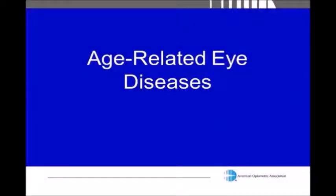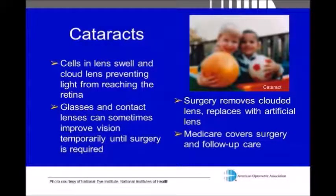Now we'll turn our attention to some age-related eye diseases. One of the most common is cataracts. What happens is the cells in the lens swell up and cause cloudiness in the lens, which prevents light from reaching the retina, the back part of the eye. Depending on the size and location, it can interfere with normal vision. It usually occurs in people aged 55 or over, and can occur in both eyes, though it may be worse in one eye than the other. If we live long enough, we all end up with cataracts — it's just a normal aging change.